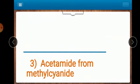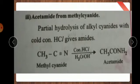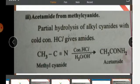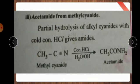Third one. Acetamide from methyl acetate. This is acetamide from methyl cyanide. Methyl cyanide CH3CN. Concentrated HCL gives CH3CONH2. Hydrolysis will be taking place here and amide will be forming. So HCL here gives CH3CONH2.